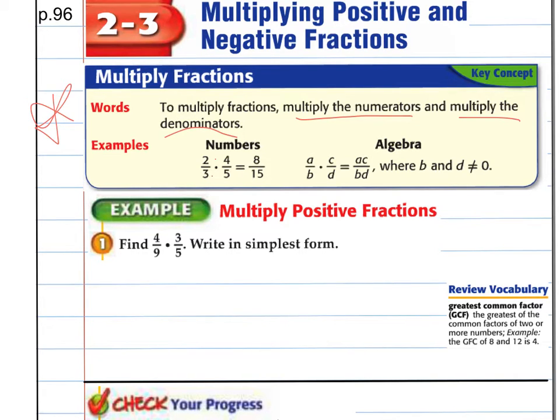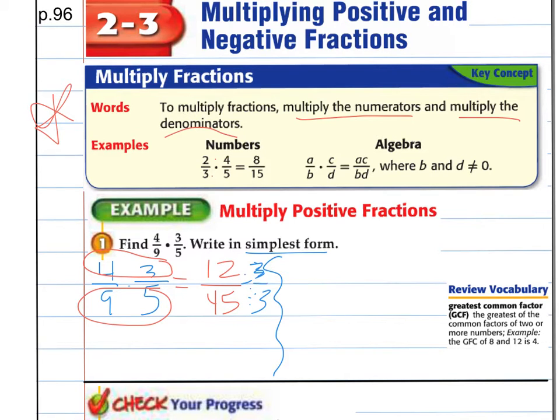So on this example 1, 4 ninths times 3 fifths, we're going to show two different ways to multiply this. If I have 4 ninths times 3 fifths, I could multiply straight across, and I get 12, 3 times 4, over 45, which is 9 times 5. But then I have to do it in simplest form. So I have to know that 3 goes into both of these. So I divide both the top and the bottom by 3. You have to do the same number, because it's really like I'm dividing by 1, which won't change the value. 3 goes into 12, 4 times. 3 goes into 45, 15 times.